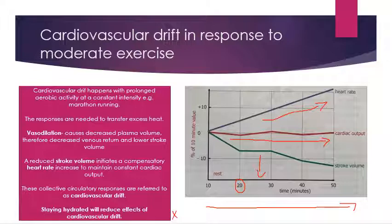Importantly, staying hydrated reduces the effects of cardiovascular drift. Hydration means improved plasma volume, resulting in less viscous blood, so stroke volume does not decrease as much. This means heart rate only needs to increase by a much smaller amount, which is better for the body and will likely allow the athlete to run, cycle, or swim for longer and perform at a higher level.